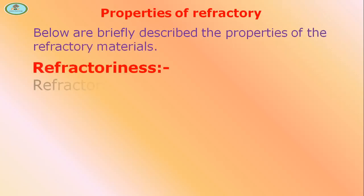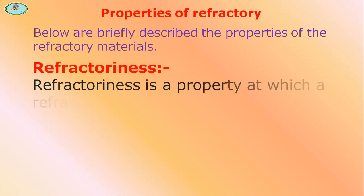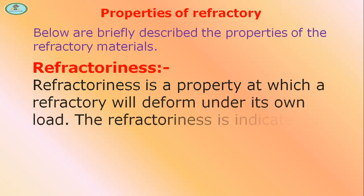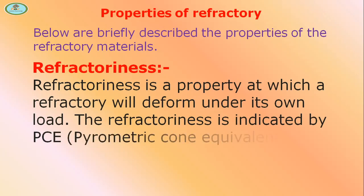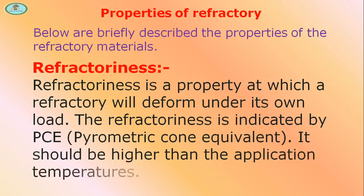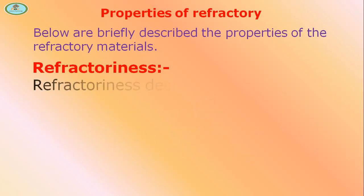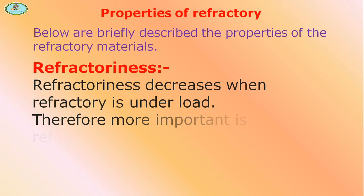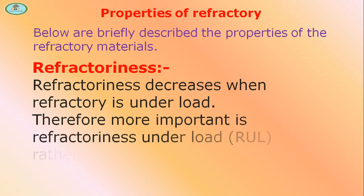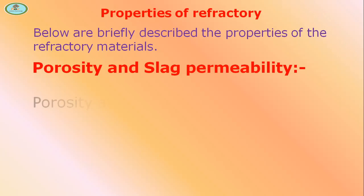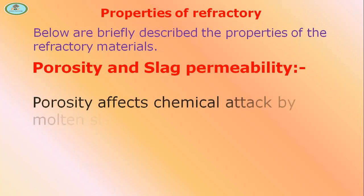Refractoriness is a property at which a refractory will deform under its own load. Refractoriness is indicated by PCE — Pyrometric Cone Equivalent — and it should be higher than the application temperatures. Refractoriness decreases when refractory is under load; therefore, more important is refractoriness under load rather than refractoriness alone.